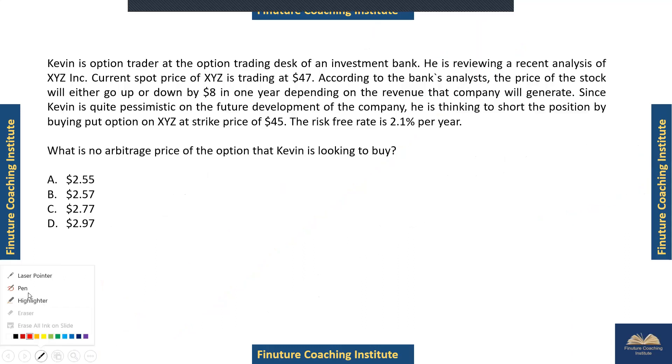There is an option trader in an investment bank named Kevin, and he's reviewing a recent analysis of a company. The current stock price of that company is trading at $47, and according to the bank's analyst, the price of the stock will either go up or down by $8.